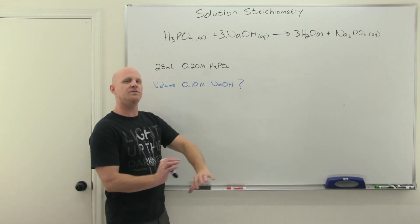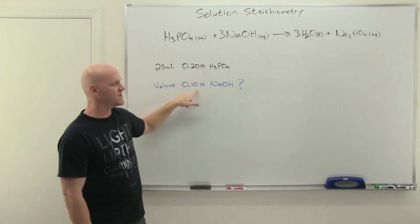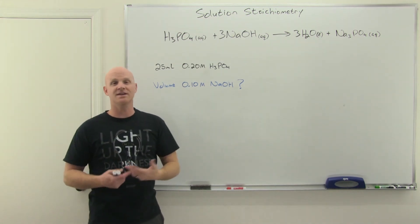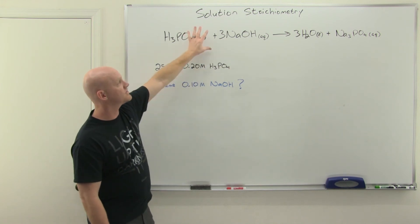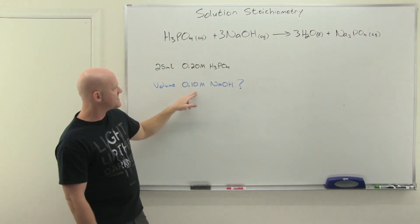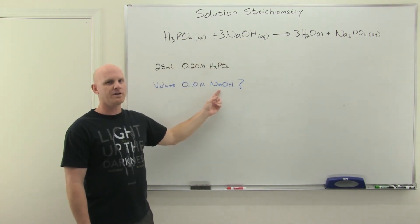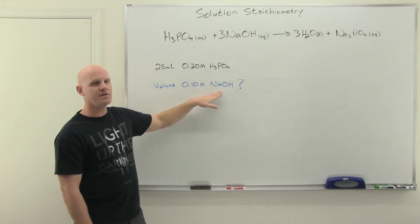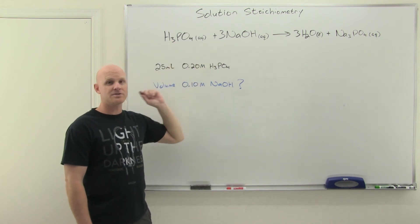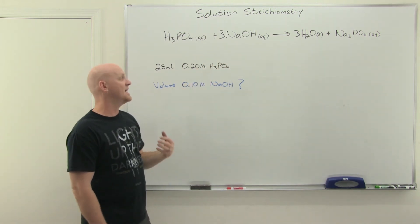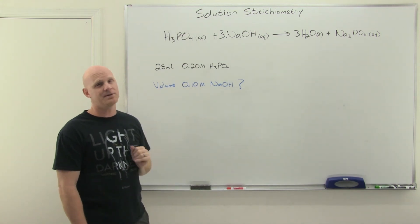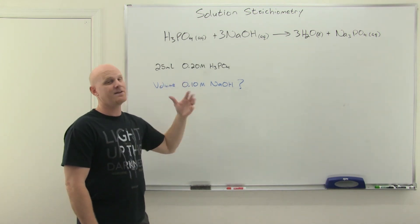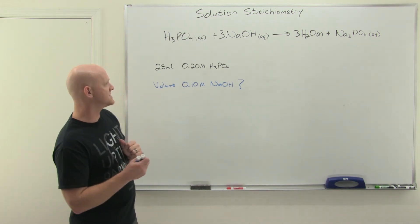Let me show you how to ballpark this. The phosphoric acid is double the concentration of the NaOH. If they reacted in a 1:1 ratio, I'd need twice the volume of NaOH — 50 milliliters — to get the same number of moles. But the stoichiometry requires three times the moles of NaOH. So instead of 50 milliliters, I need to triple it: 150 milliliters. But let's work through the process anyway.